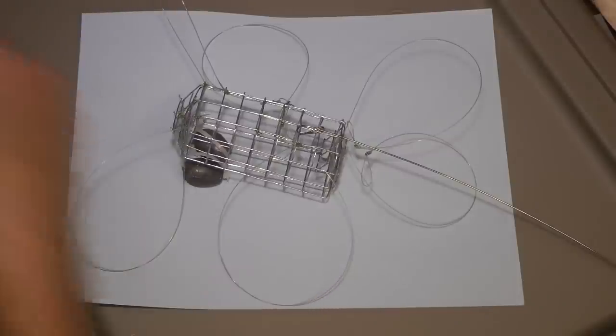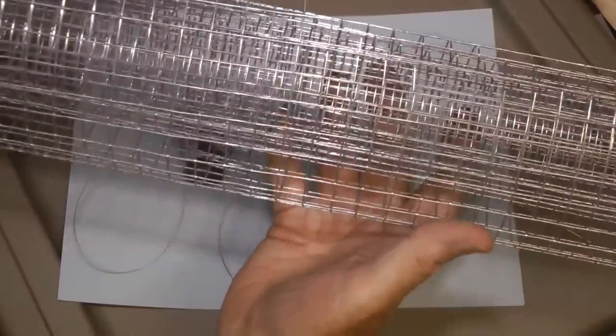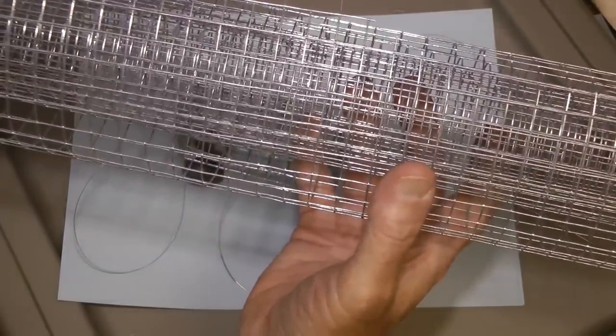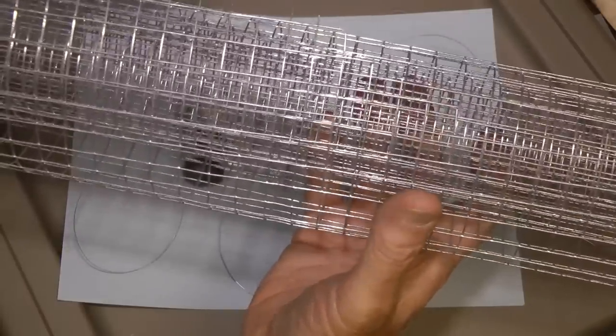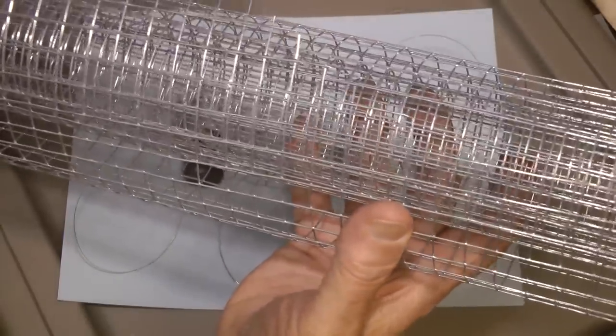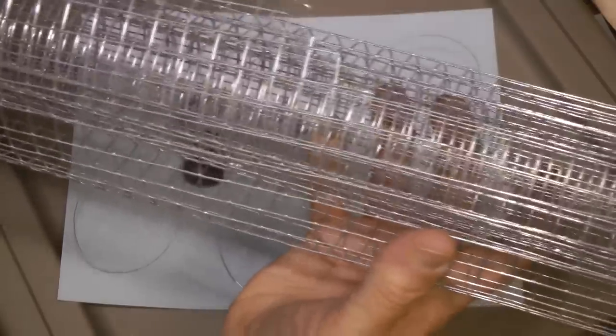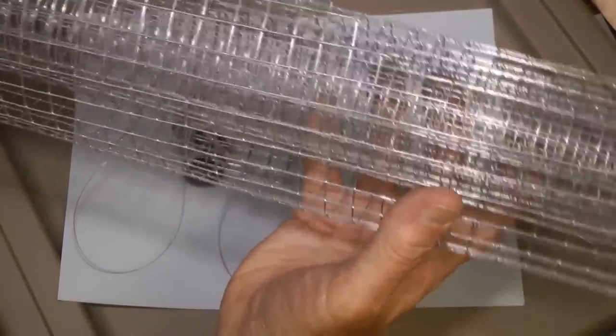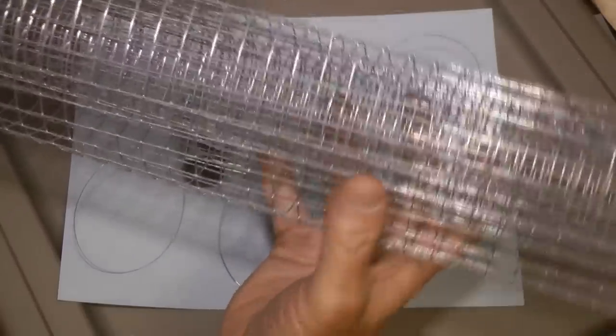We're going to start with a regular roll of half by half welded wire. You can use three-eighths or slightly bigger if you like, but this works good. If you go to quarter, it's going to get too heavy. This is nice and pliable, you can work it real well.